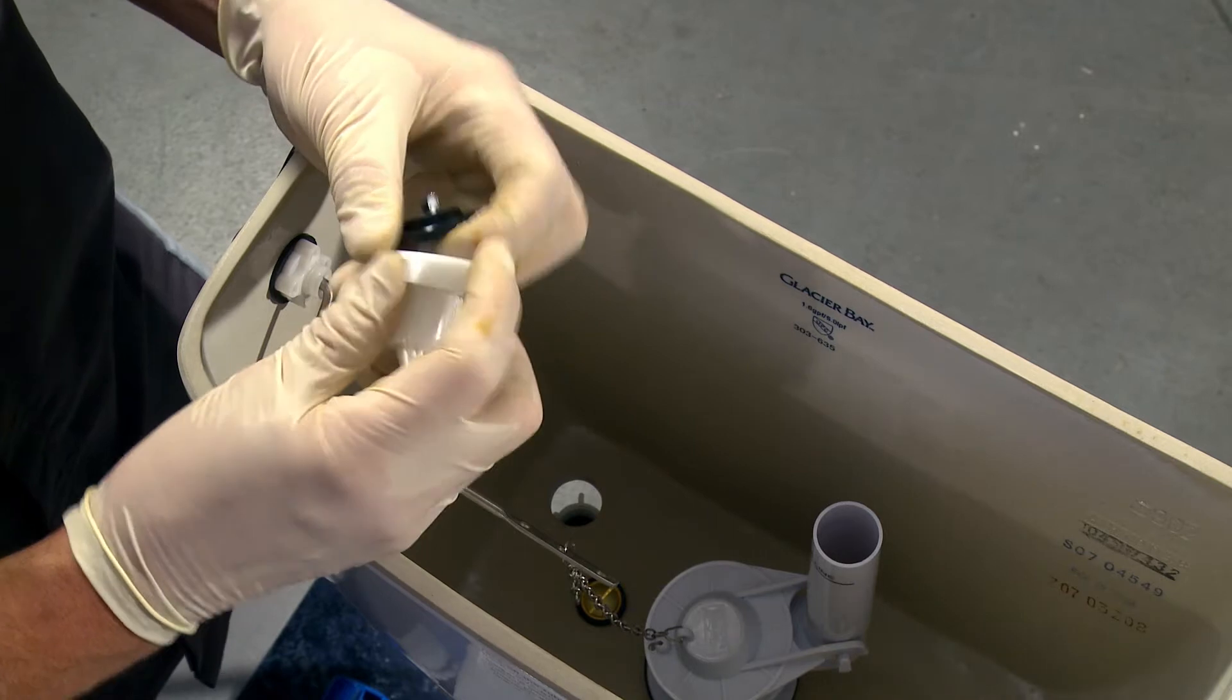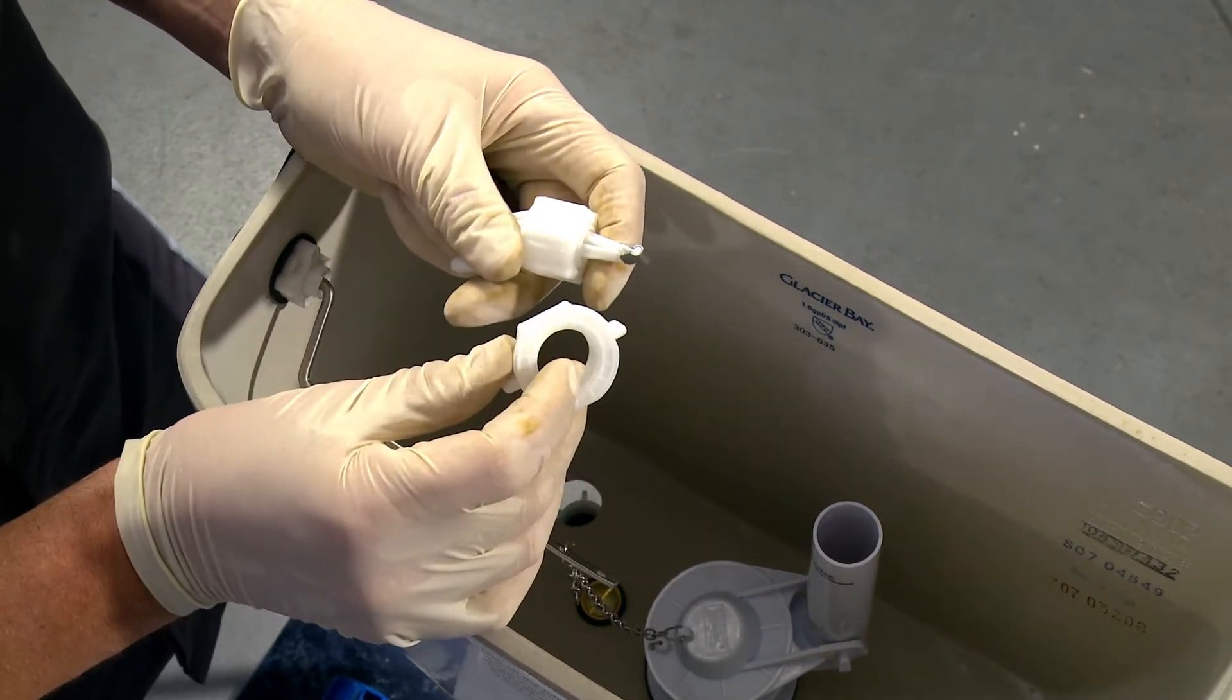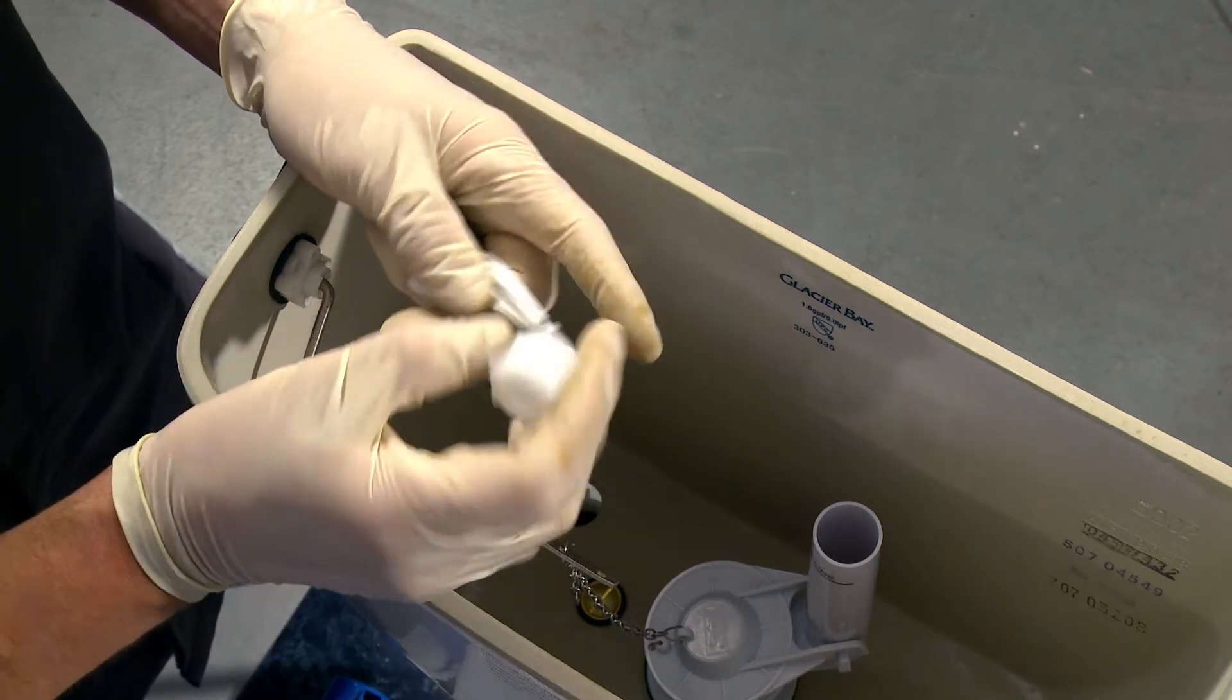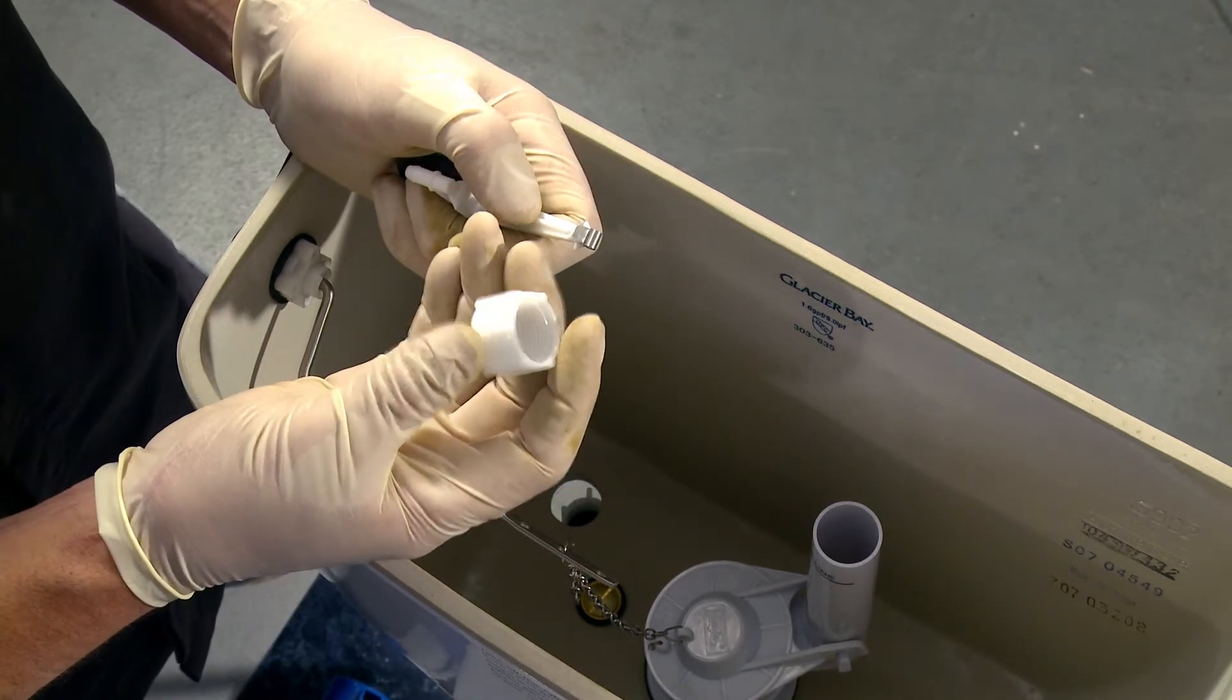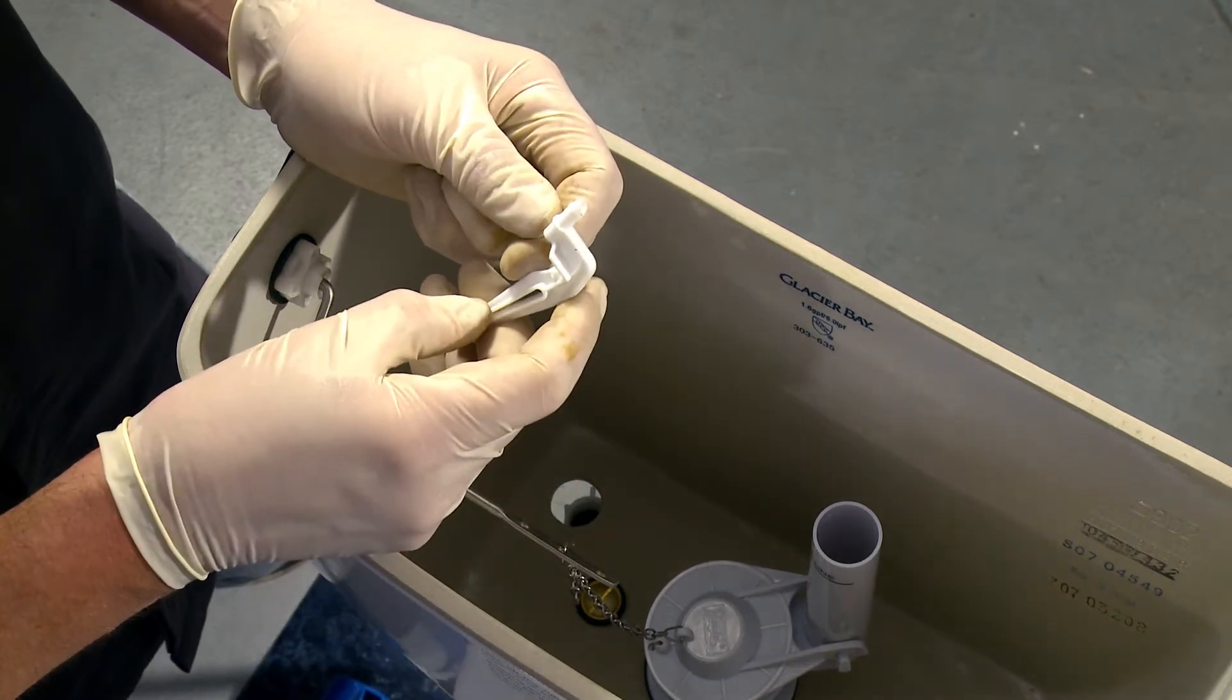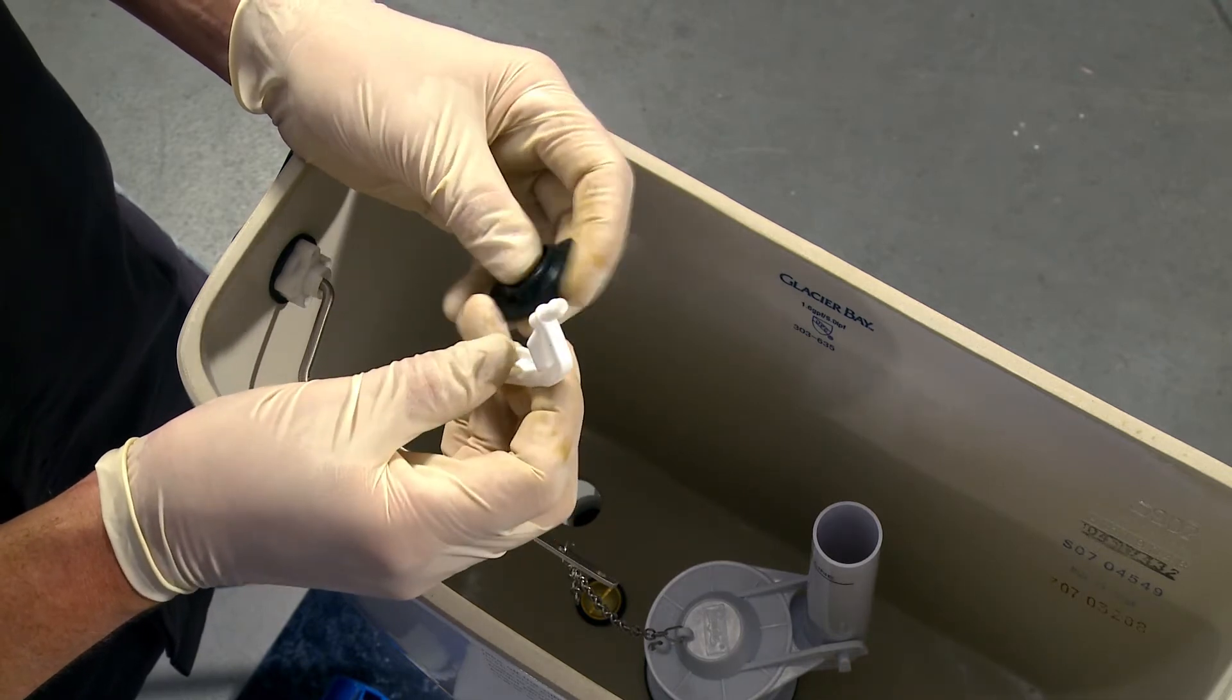Your new fill valve, the vast majority of them come this way. This is its securing nut that goes on the bottom of the tank to hold it in place. This is used for plastic tubing supply lines. Most of the time it gets thrown away. This is the attachment that allows your secondary fill tube to fill up the bowl.